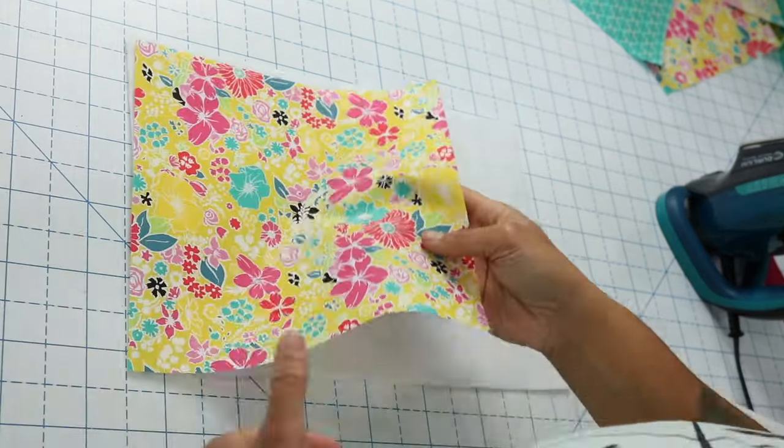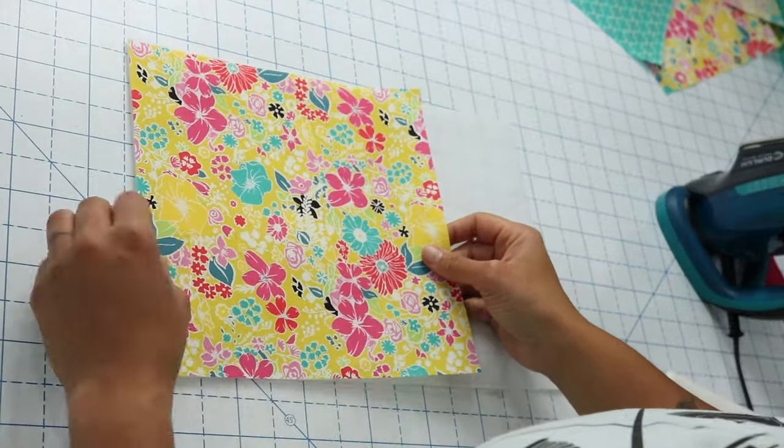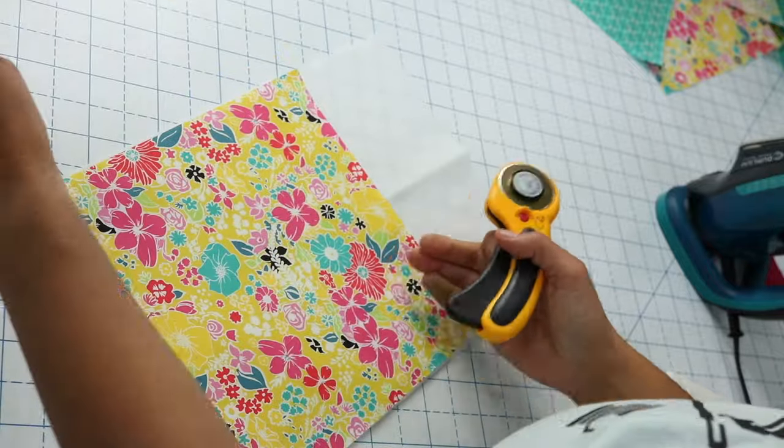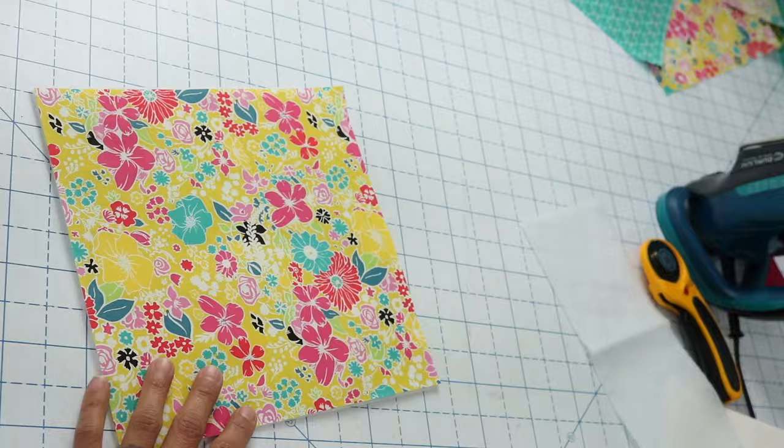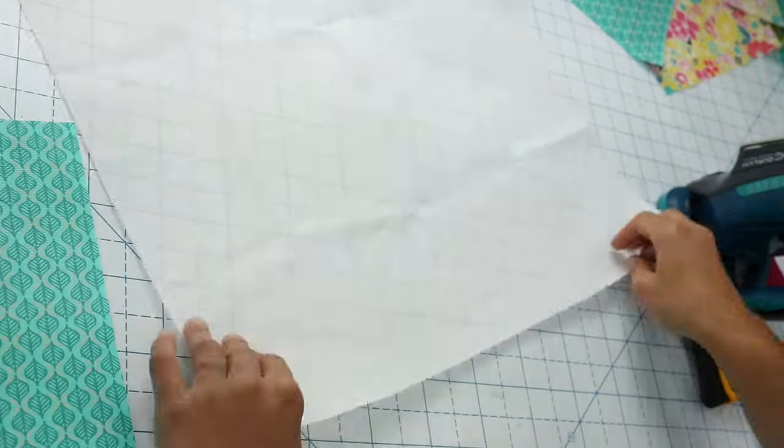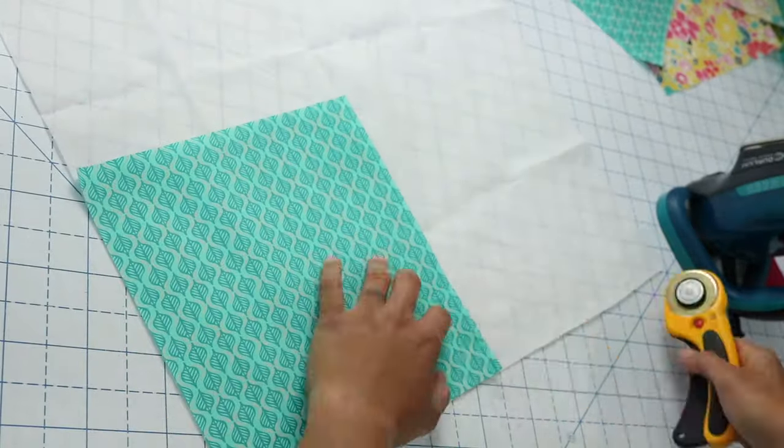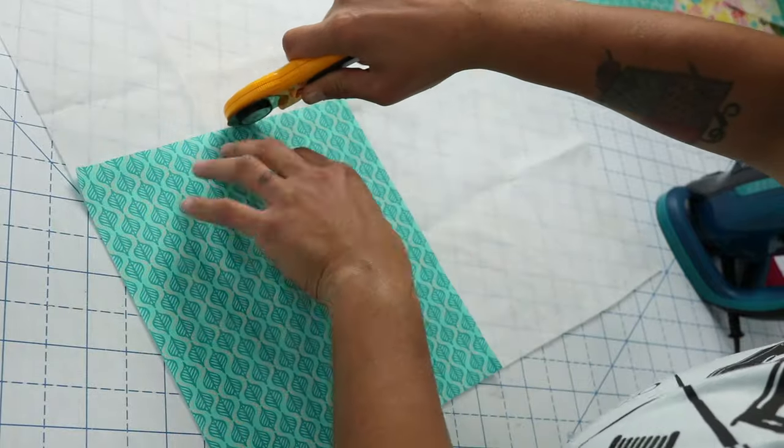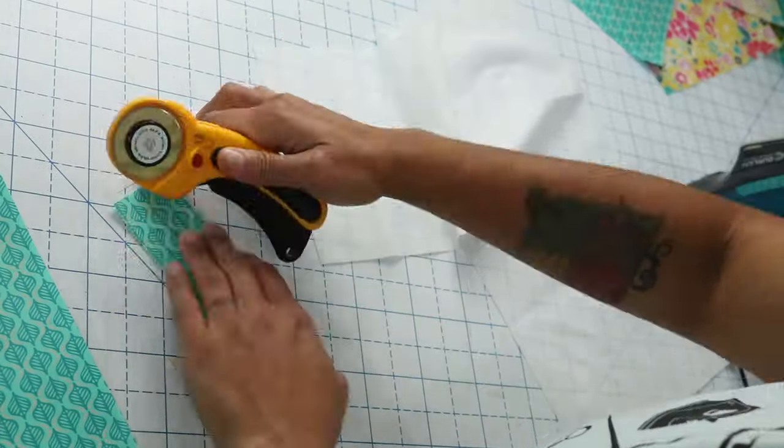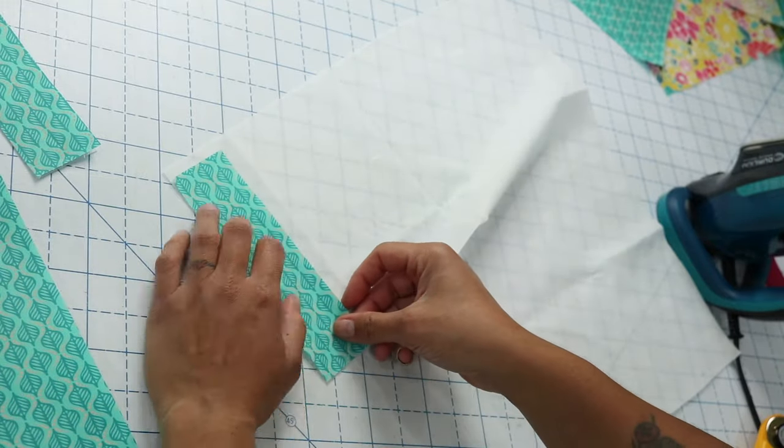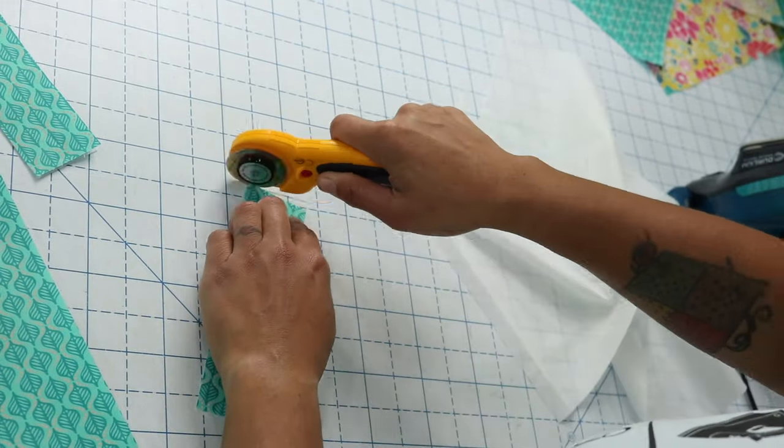Now to help give the outside of our basket a little bit of body, I'm placing the exterior fabric square on top of a piece of light fusible batting. You could also use fusible fleece or regular quilt batting. If it's not fusible though, make sure you stitch through it to hold the layers together. Now the lining fabric square and the two strips for the handles get a matching piece of cotton woven fusible interfacing.